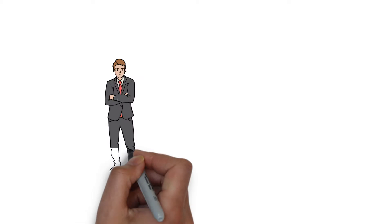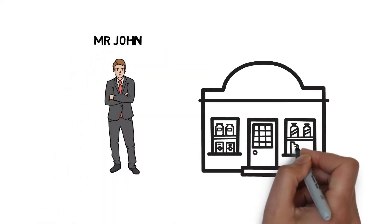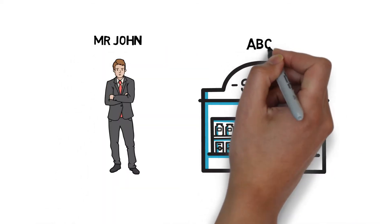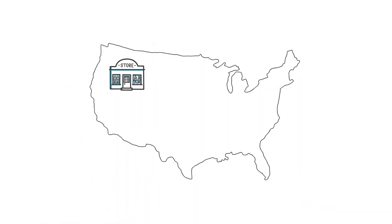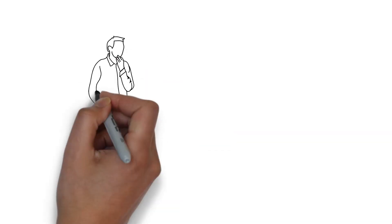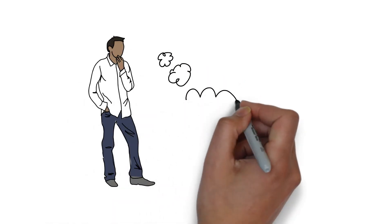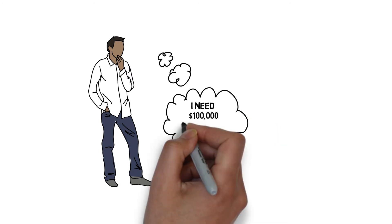This is Mr. John. He is a businessman and owns a store. His store is making a good profit. And he plans to expand his business to five other states. He has calculated the cost of building five other stores and needs $100,000 to expand his business.